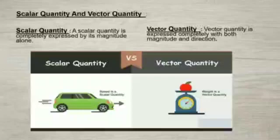Vector quantities are important in the study of motion. The quantity that is expressed completely only when magnitude and direction are both given is called a vector quantity. Displacement and velocity are vector quantities. For example, a displacement of 20 km towards the north, or an aeroplane flying at a velocity of 500 km per hour towards Mumbai, are vector quantities.